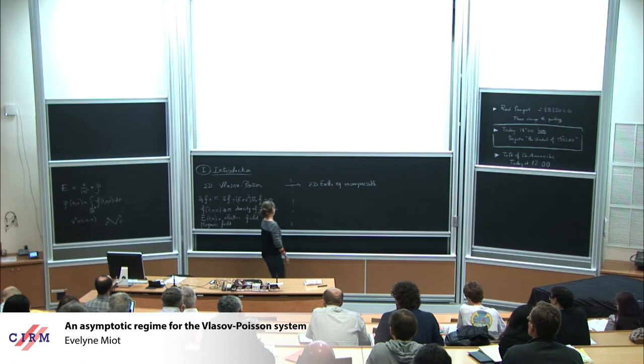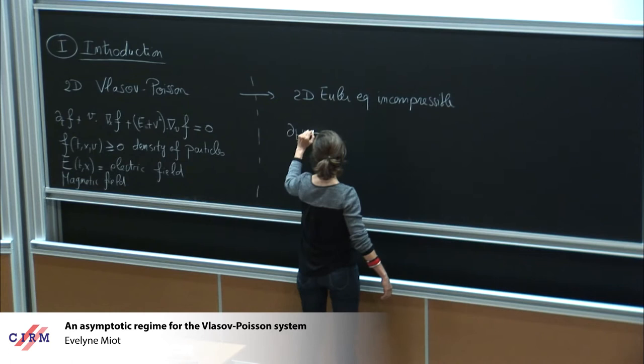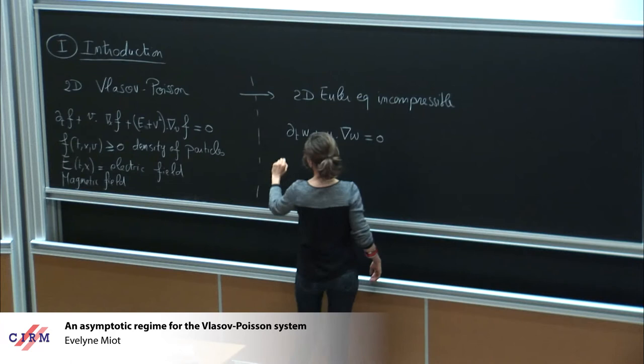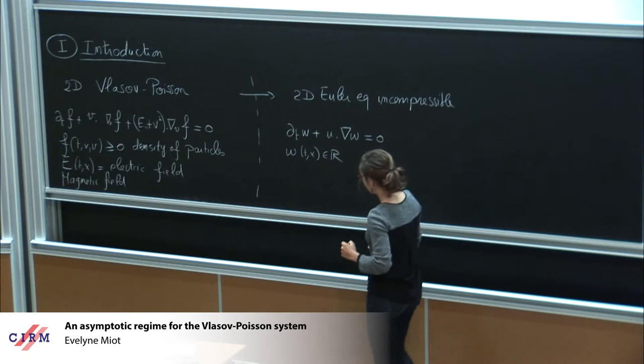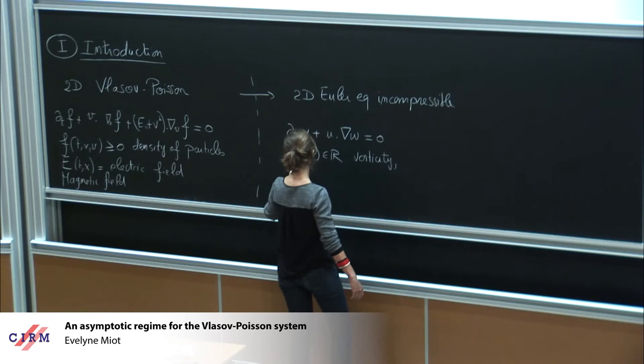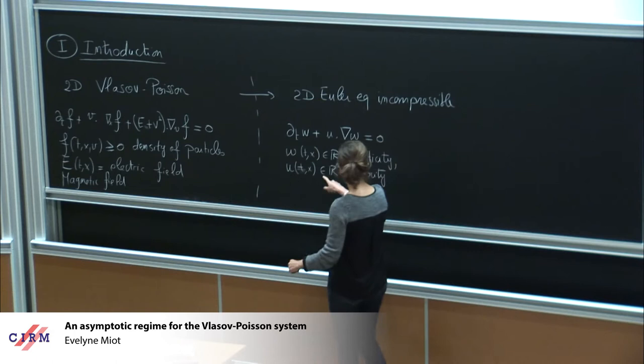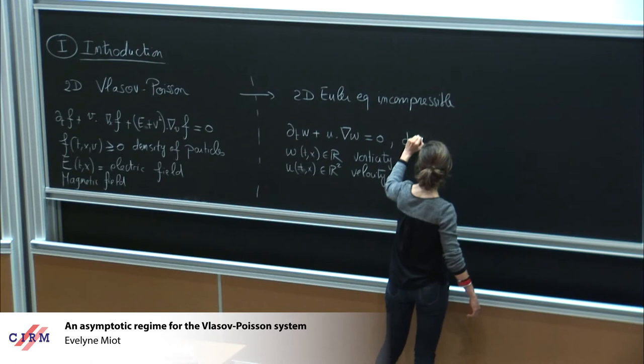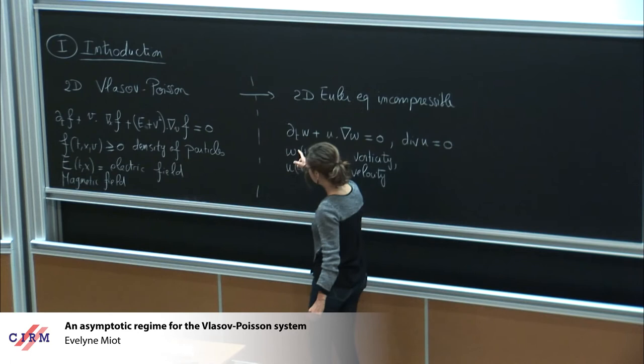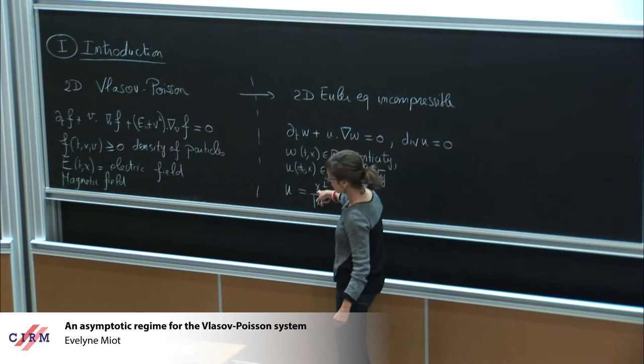I recall briefly the incompressible Euler equations in vorticity formulation. They are written as dt omega plus u gradient omega equals zero, where omega of t and x is a real function, it's the vorticity. U of t and x is the velocity field. In fact, omega is the curl of the velocity. And u, since we deal with the incompressible case, divergence of u equals zero, which means that you can recover the velocity in terms of the vorticity by the Biot-Savart law, which tells you that u equals the convolution of omega with this kernel x perp over x squared.